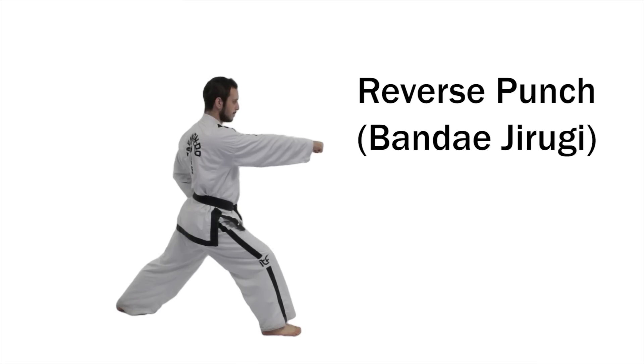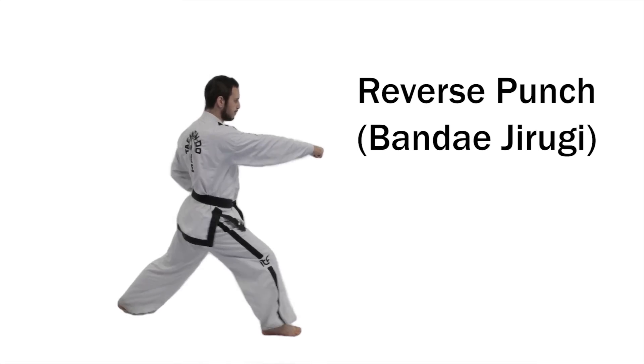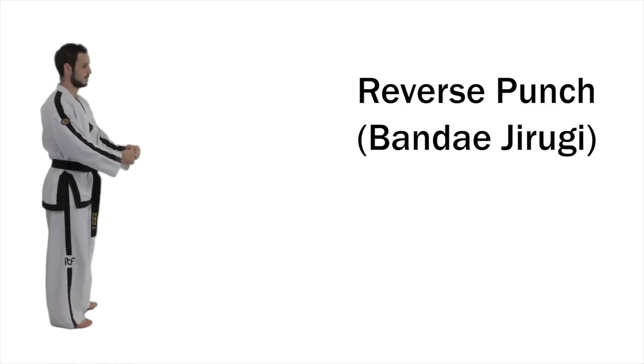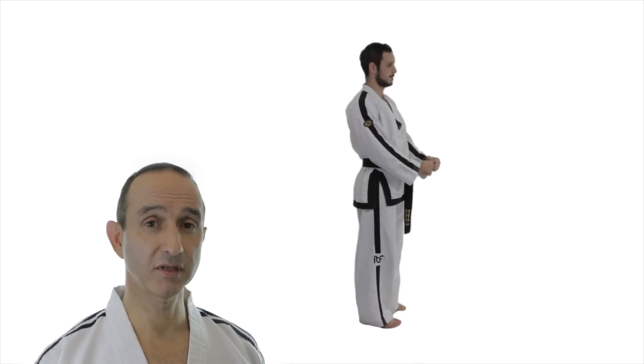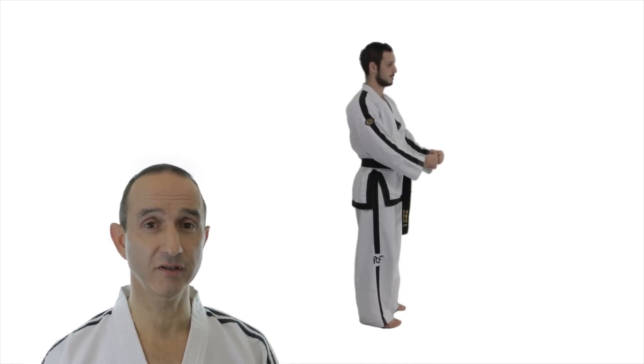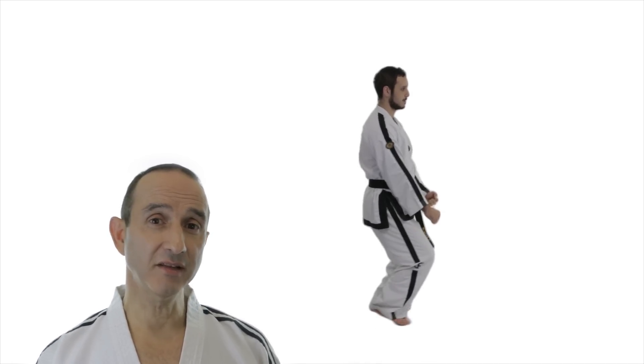Now here's an example of a reverse punch. That was just an obverse punch in reverse — here's a proper example. In this example we still have a right walking stance but the punch is executed with the left fist, so this makes it a reverse punch because the punch is on the opposite side to the stance.